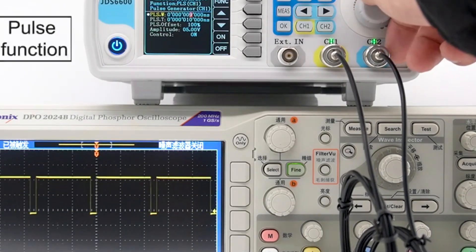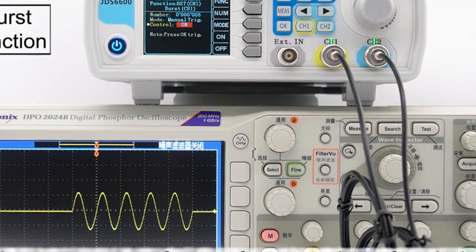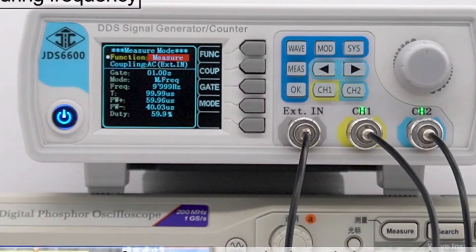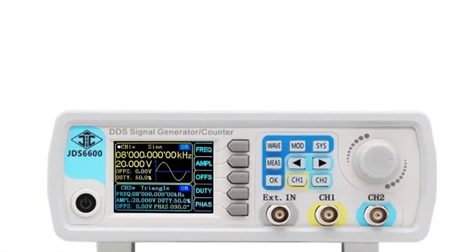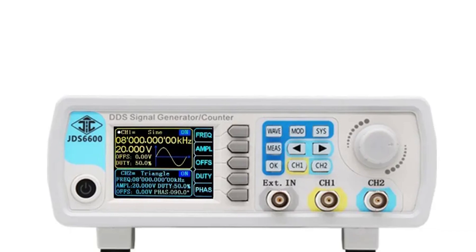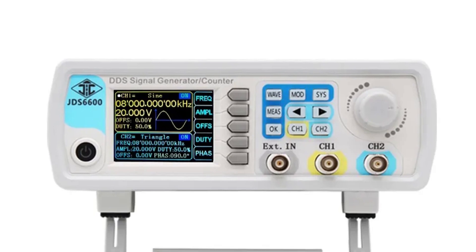The generator allows for waveform customization, reproducing patterns of custom waveforms. It has 60 groups of arbitrary wave storage functions, each with a memory depth of 2048 14 bits, providing flexibility for waveform storage and recall. The duty cycle adjustment of each channel has a resolution of 0.1%, making it ideal for fine-tuning applications.